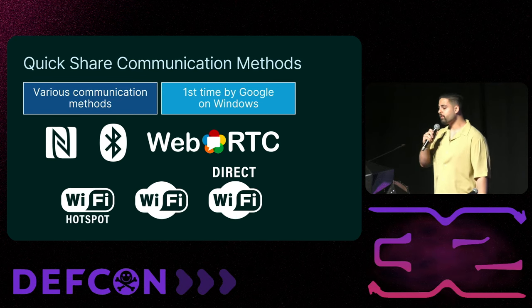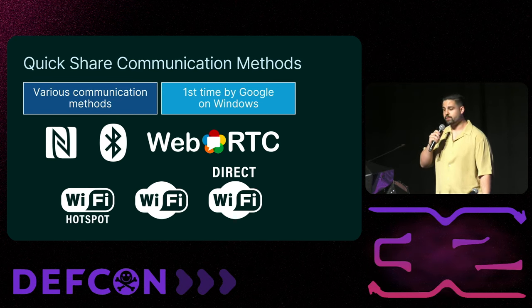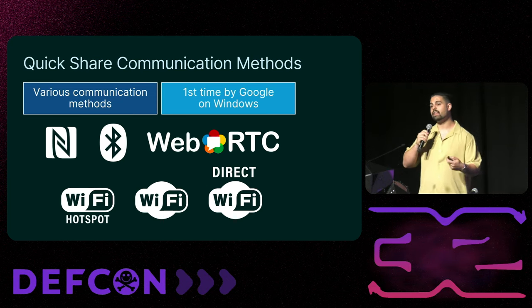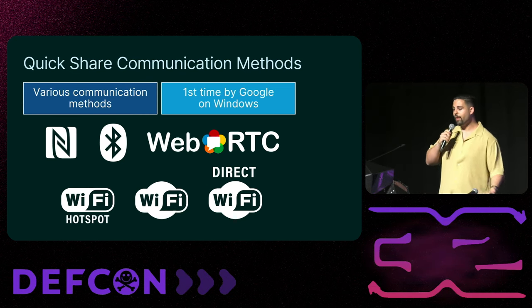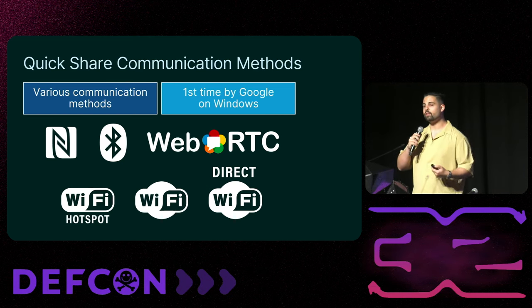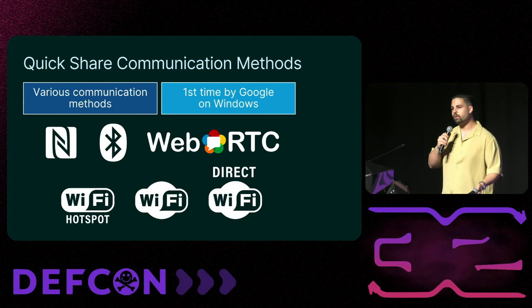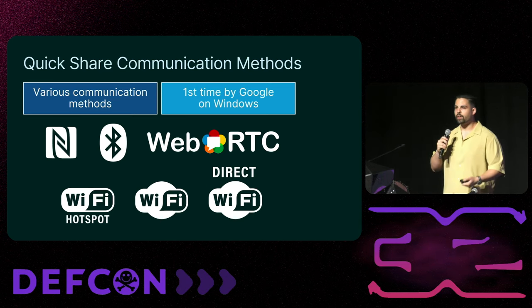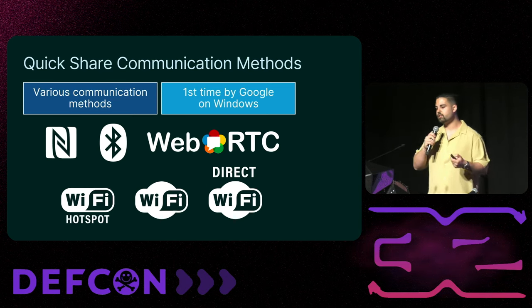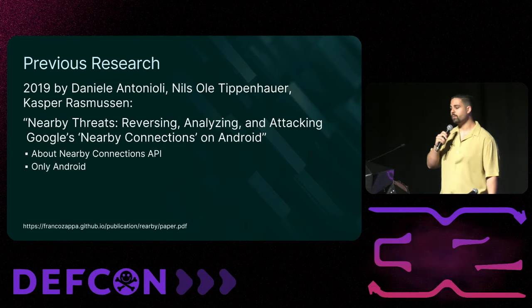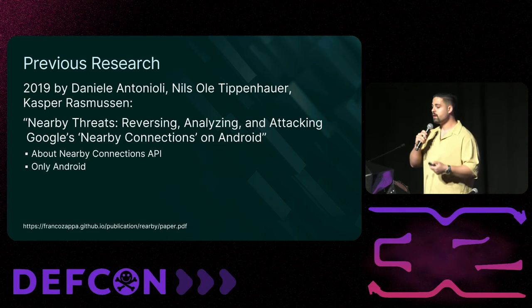QuickShare performs file transfers using several communication methods: it supports WebRTC, Bluetooth, Wi-Fi, NFC, Wi-Fi Direct, and even sending files over a Wi-Fi hotspot of one of the devices. As far as we knew, QuickShare was Google's first Windows app to use all these communication methods. Most Google services on Windows run in the browser — this was a first of a kind for Google, and thus chances for mistakes were higher.